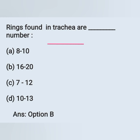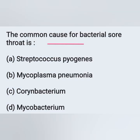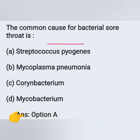Next question: the common cause of bacterial sore throat is? Options: A) Streptococcus pyogenes, B) Mycoplasma pneumoniae, C) Corynebacterium, D) Mycobacterium. The main causative organism for bacterial sore throat is Streptococcus pyogenes. Option A is the correct answer.